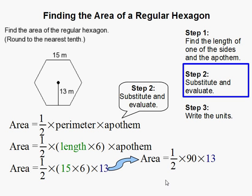And you go ahead and evaluate a little bit and the 15 times 6 is 90. And this is times 13 over here. And half of 90 is 45. So eventually we get 585.